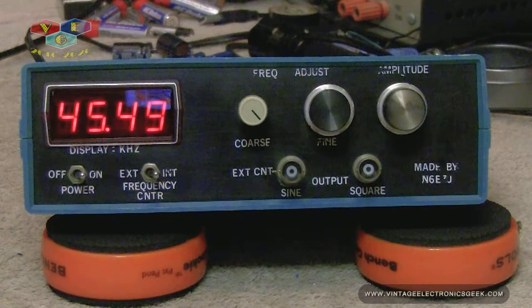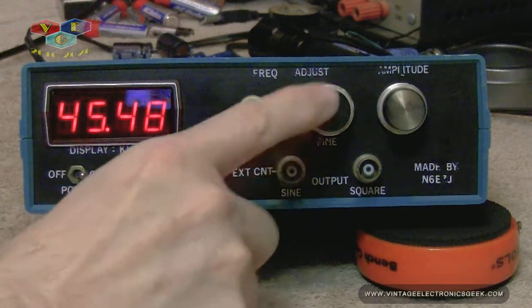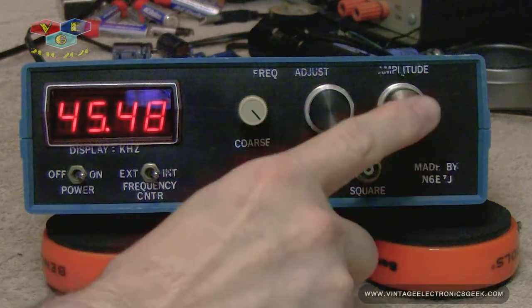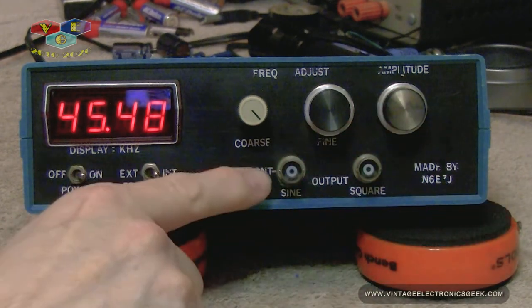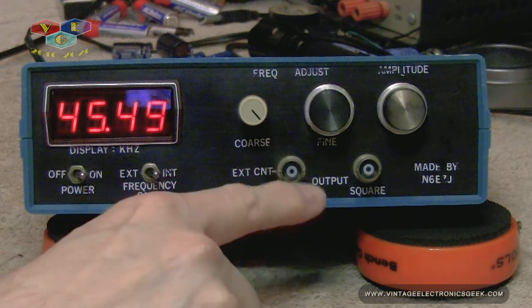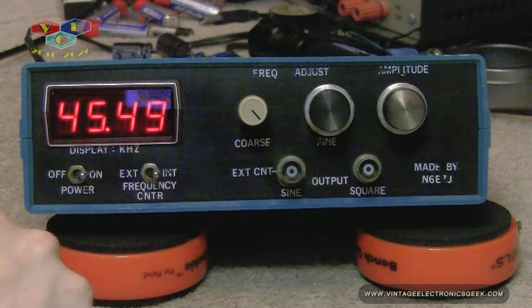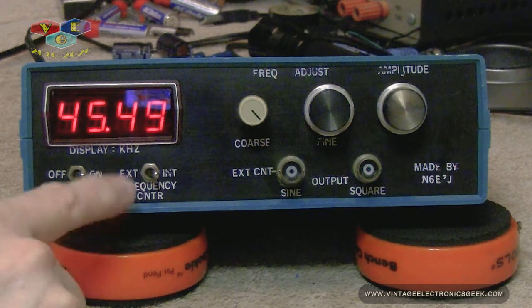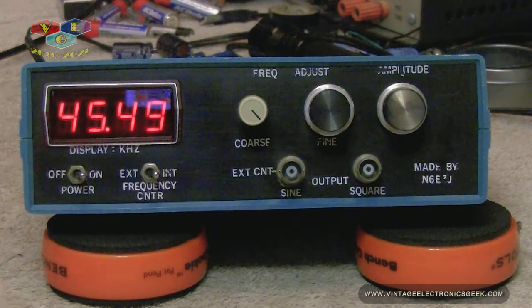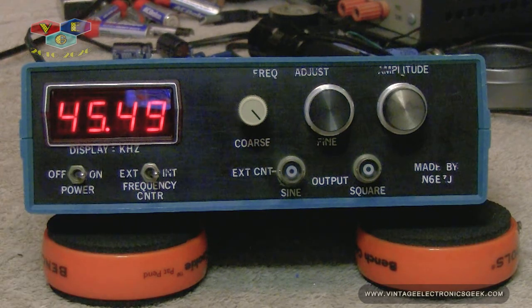And as you saw, we do have a coarse control and a fine tune. We have our amplitude. Amplitude is only good for sine wave. We have a sine wave and we have a square wave. We have our power on-off, and we have an internal-external switch for the frequency counter, which is also a little confusing, perplexing.